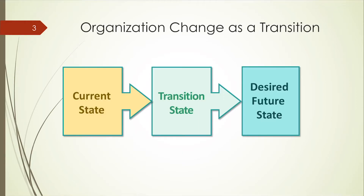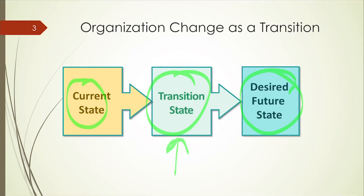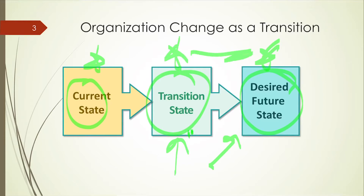This is really what I just talked about. You have the current state, you have the desired future state, and the transition state. This is the key — you're going to have to resolve this transition before you can get to the desired state. That's where the communication, preparing the people for change, all of these factors come into play. So this is where you are, this is where you want to be, and this is what it's going to take to get there — a very simple, straightforward formula, but a very important one to include in your change strategy.